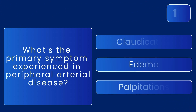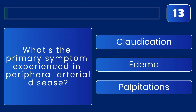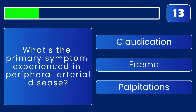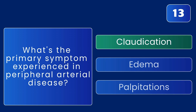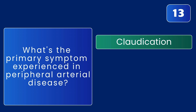What's the primary symptom experienced in peripheral arterial disease? The answer is claudication — it's pain with walking due to poor blood flow.